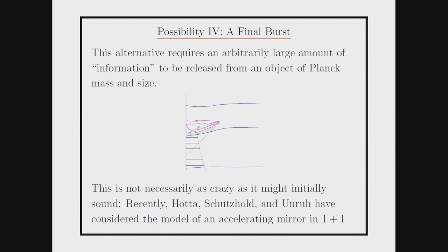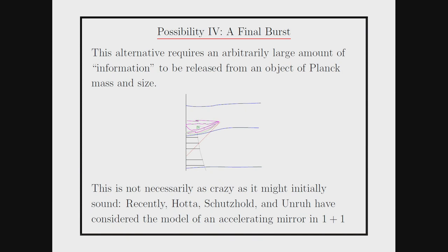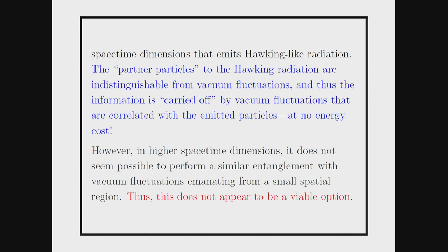Finally, maybe the black hole evaporates but everything classically described as going into the singularity comes out in a final burst, restoring the information. There's a nice model with moving mirrors by Hoda, Schützhold, and Unruh where you'd get Hawking radiation but end up with a pure state. However, one can show that although you're effectively getting entanglement with vacuum fluctuations, you have to emit real inertial particles in this process, and the usual arguments against bursts — needing too much energy to carry off the information — do apply even with this modified idea.